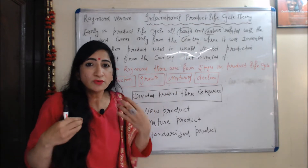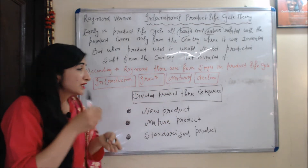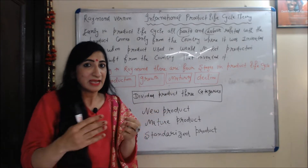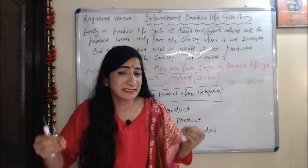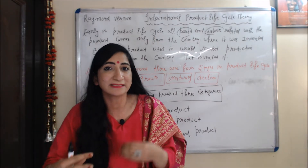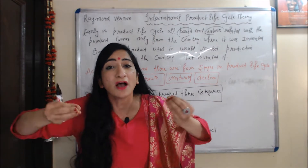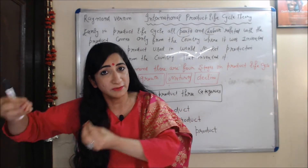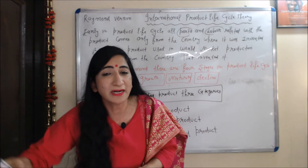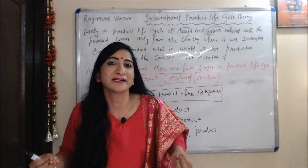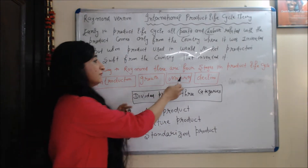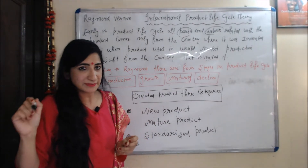But when the product is used in the world market, production shifts from the country that invented it. According to Raymond Vernon, there are four stages in the product life cycle: introduction, growth, maturity, and decline.